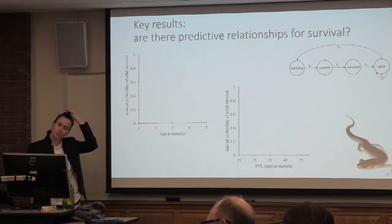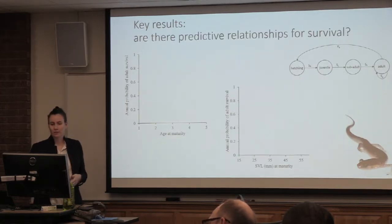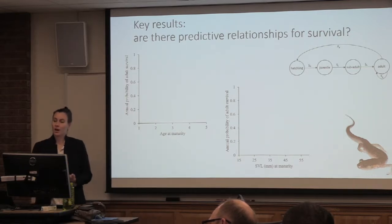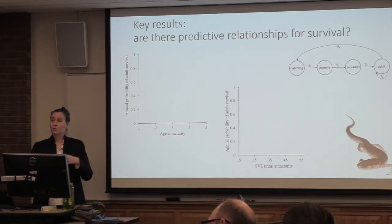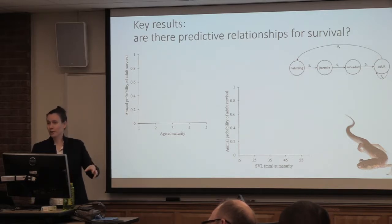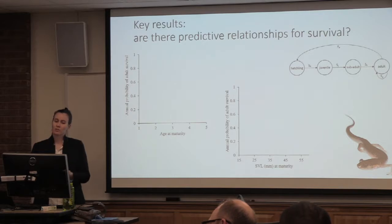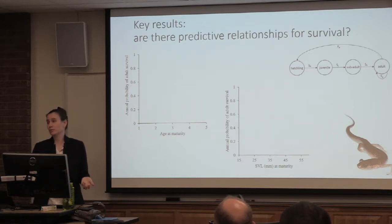So are there any predictive relationships for survival that we found? Well, going back to classical life history theory, we might think that annual probability of survival should be higher if your age at maturity is greater — because if you took a long time to reach maturity, you should live for a while so that investment was worth it. So you should have higher survival as an adult. The same applies to snout-vent length at maturity: the larger that is, the longer it probably took you to reach maturity, and so the higher your adult survival should be.